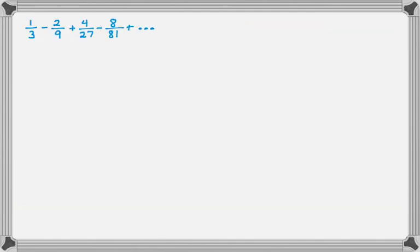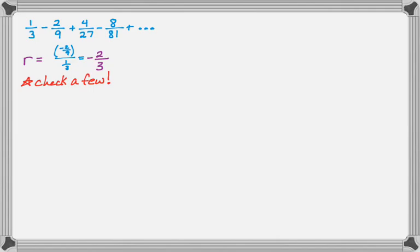Sometimes instead of a summation you're given terms written out. You want to recognize it's geometric and check by dividing consecutive terms. Dividing the second term by the first gives R equals negative 2 thirds. Verify: 1 third times negative 2 thirds is negative 2 ninths; negative 2 ninths times negative 2 thirds is 4 over 27; and 4 over 27 times negative 2 thirds gives negative 8 over 81 — confirming R is correct. Since the absolute value of negative 2 thirds is less than 1, the sum is the first term over 1 minus negative 2 thirds, which simplifies to 1 fifth.